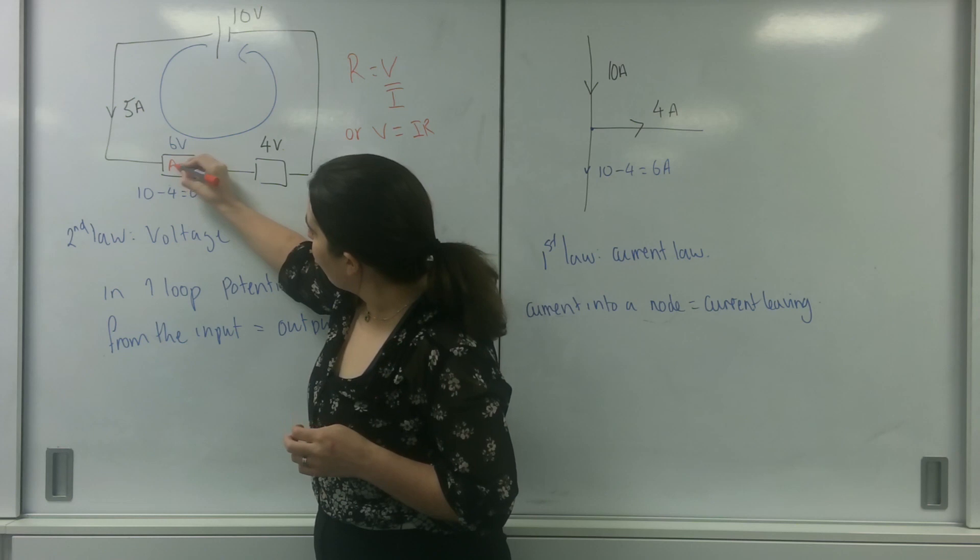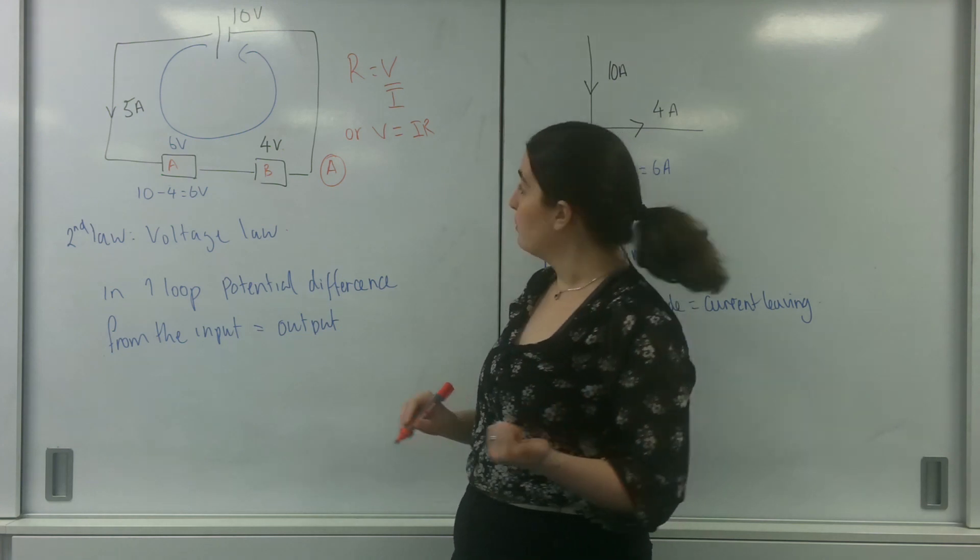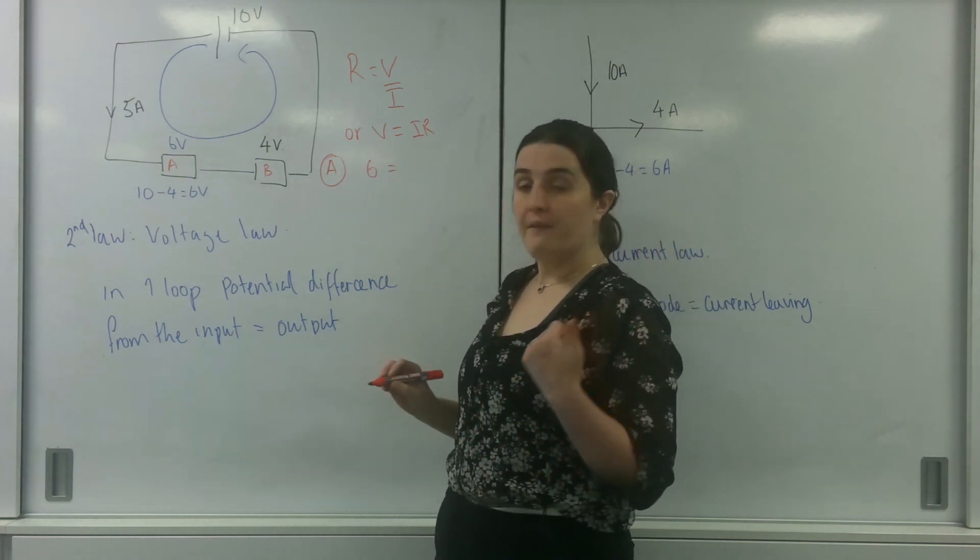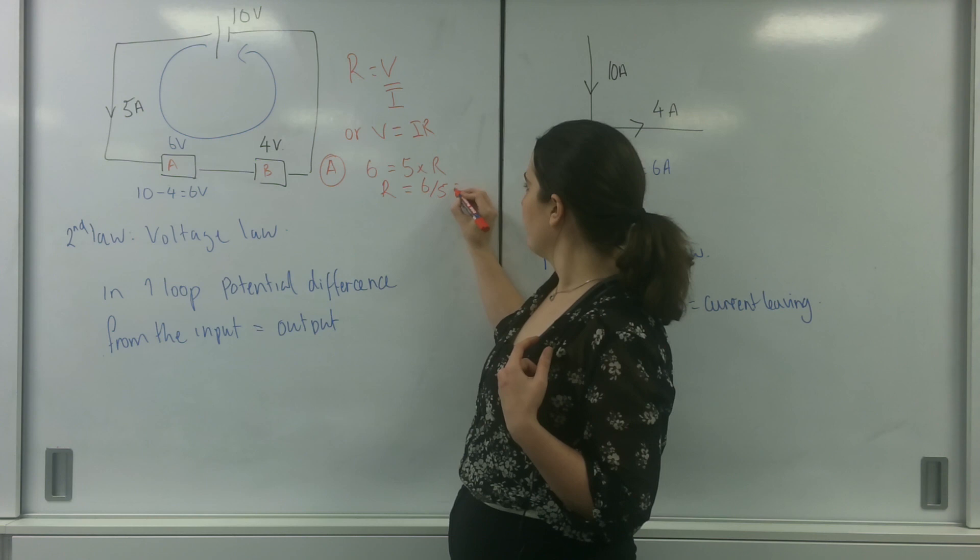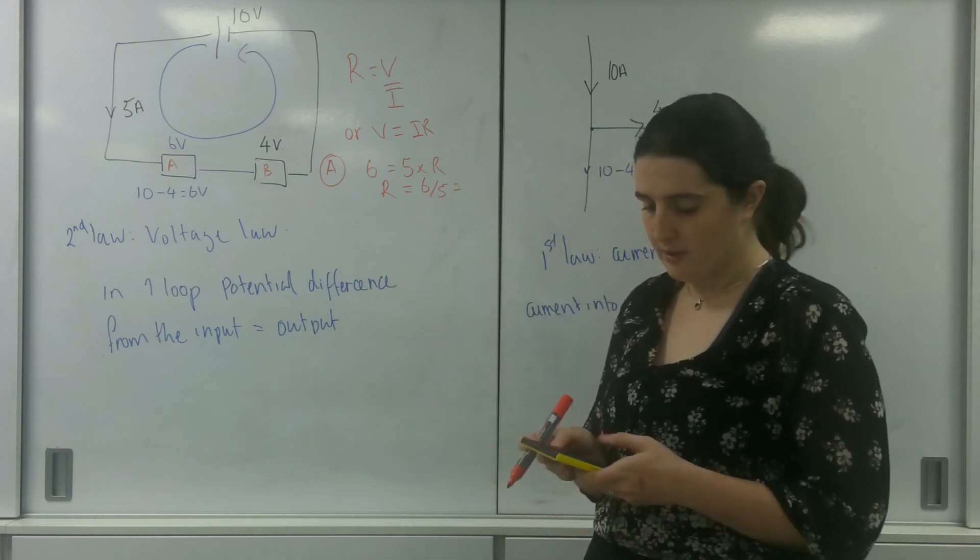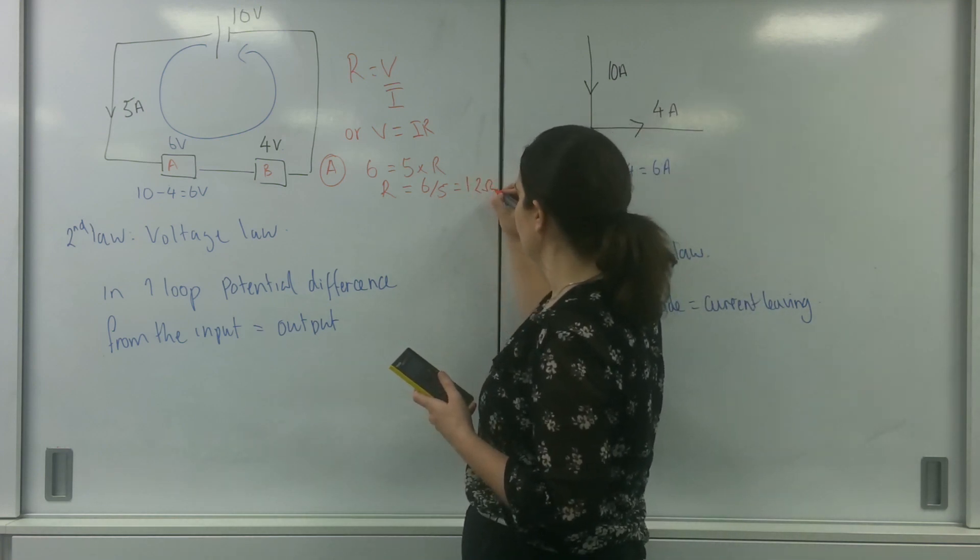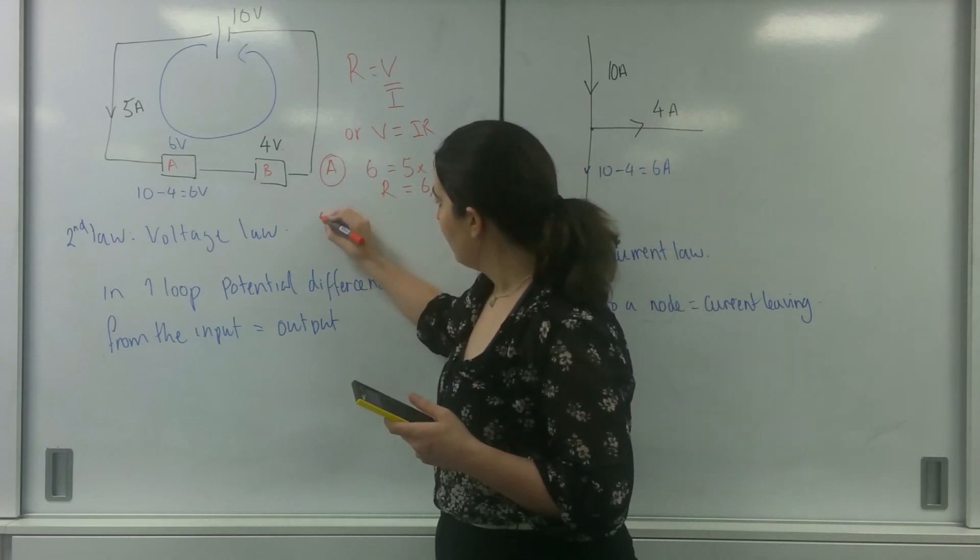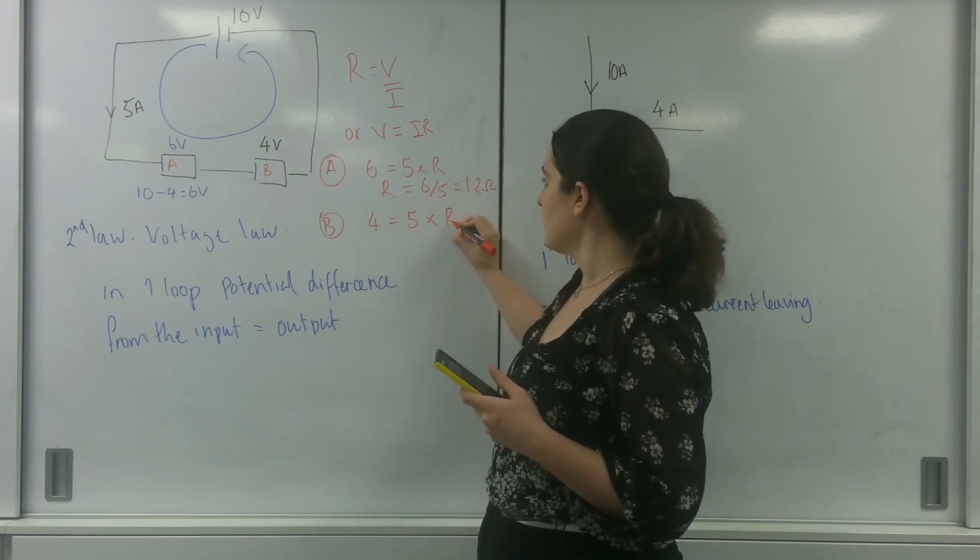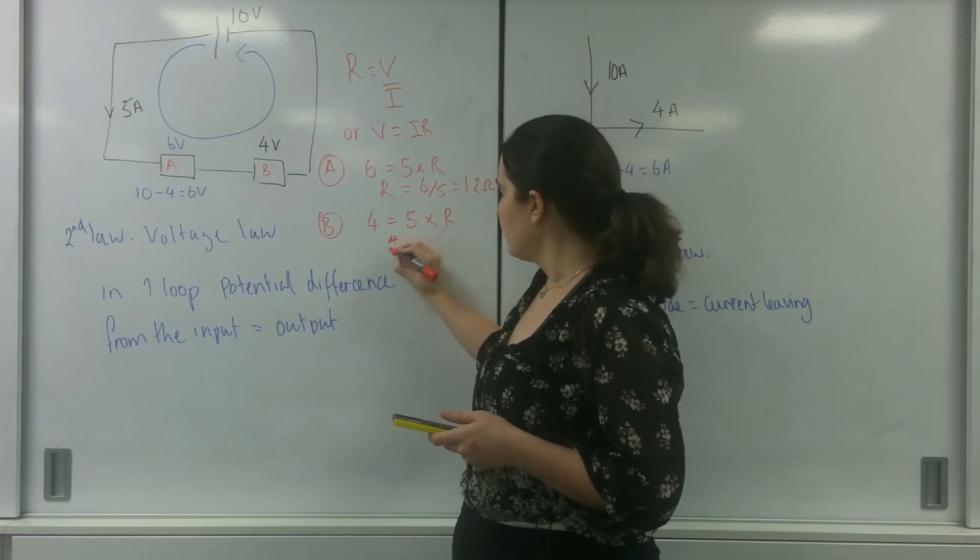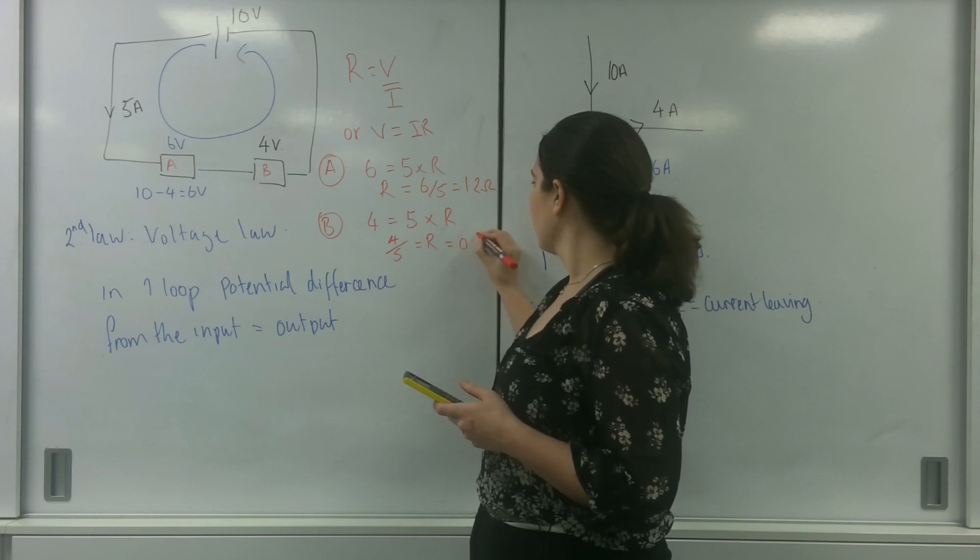So we're going to call this one A, and I'm going to call this one B. A has 6 volts and 5 amps going through it. So R is 6 divided by 5, which is 1.2 ohms. And B is 4 equals 5 times the resistance. So 4 divided by 5 equals the resistance, which is 0.8 ohms.